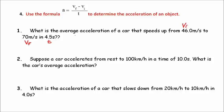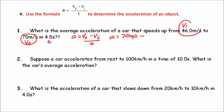Let's set this up in three steps. Step one: write the equation — acceleration equals V sub f minus V sub i divided by t. Step two: plug in the numbers and units. Acceleration equals the final velocity, 70 meters per second, minus the initial velocity, 46.0 meters per second, divided by the time, 4.5 seconds.